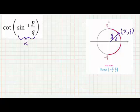The Pythagorean Theorem can now be used to find our unknown x. We have that x squared plus p squared is equal to q squared.